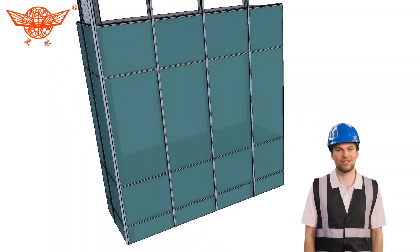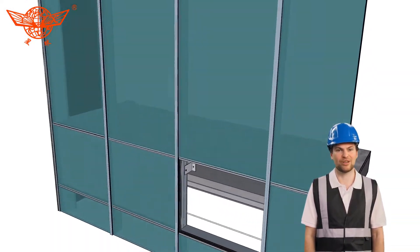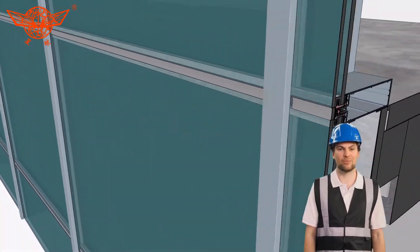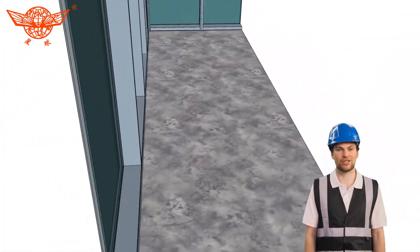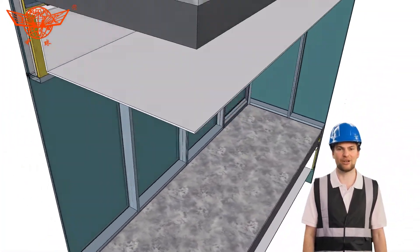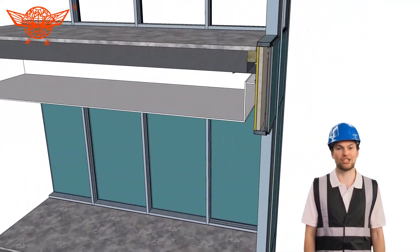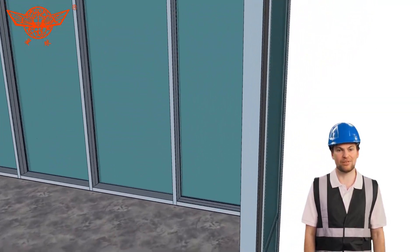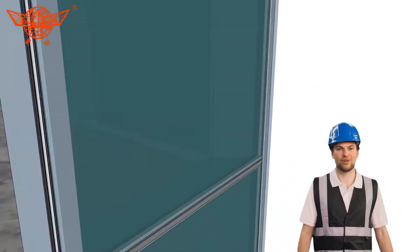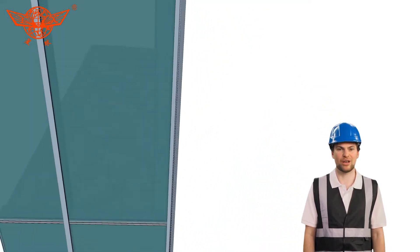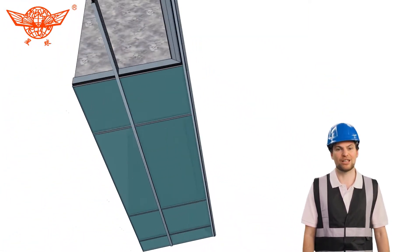But it's not just about looks. Aluminum curtain wall profiles also have excellent thermal properties, helping to improve the energy efficiency of buildings by reducing heat loss and enhancing thermal insulation properties. This can lead to reduced heating and cooling costs for building owners while creating a comfortable indoor environment for occupants.